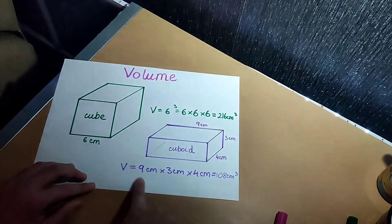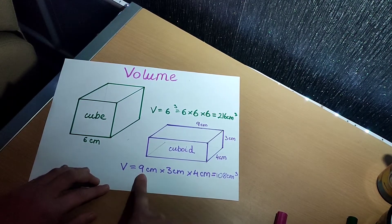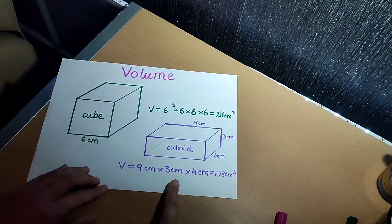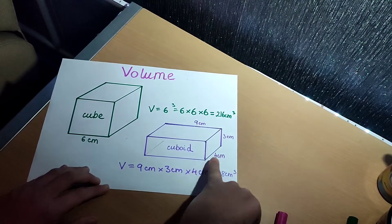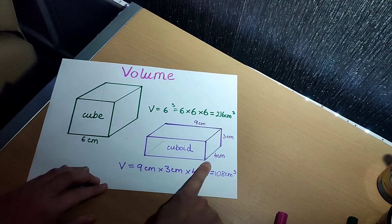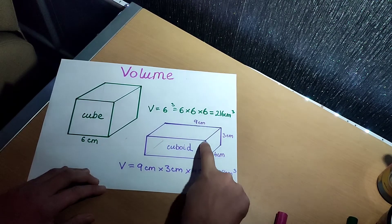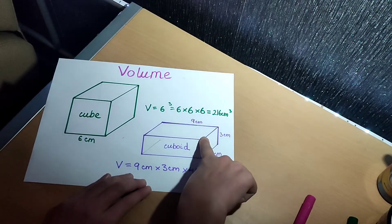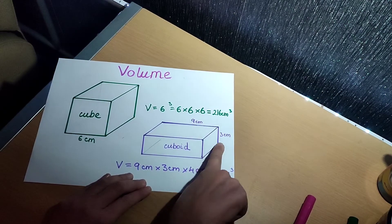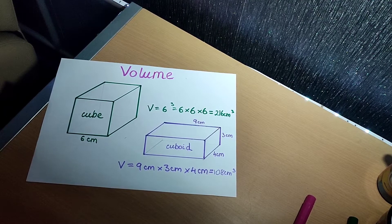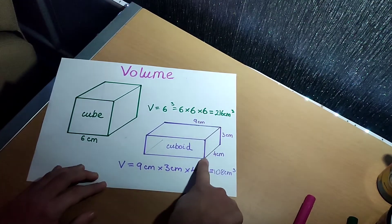This is a cuboid. The volume of the cuboid — do we know its length? Nine centimeters. Height? Three centimeters. And its depth? Four centimeters. In this case I'm calling this length, not width — you can call it width if you want, it doesn't really matter, as long as you multiply all three dimensions. The easiest way is to go from a corner — from one corner you'll see all three dimensions. To work out the volume of a cuboid shape, you multiply all three dimensions by each other.